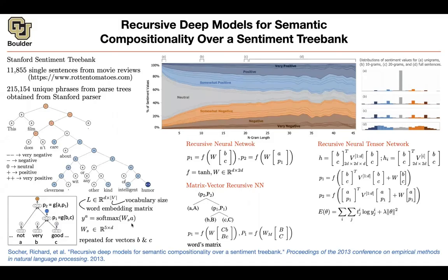If the ground truth label for a node is the third — neutral — you increase P3. That's exactly what the loss function does: it picks out the corresponding probability. The next term regularizes the model to prevent overfitting. Theta consists of V, WS, W, and L. L can be initialized with word vectors from word2vec or GloVe, or initialized randomly and learned by the neural network. If you have enough data you can learn L, WS, W, and V through this objective function — which is the cross-entropy loss.